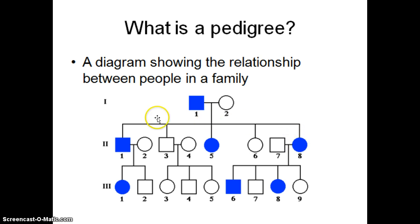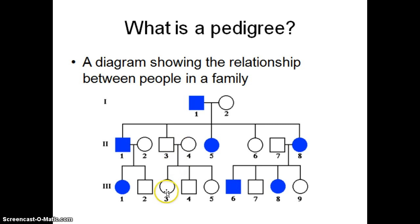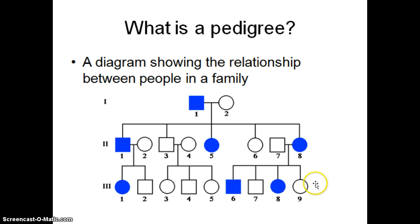Their first son is married to a woman, and they have two children — a girl and a boy. Their second son is married to a woman, and they have three children — a girl, a boy, and a girl. The first daughter is not married. The second daughter is not married. But their third daughter is married to a man, and they have four children — two boys and two girls.